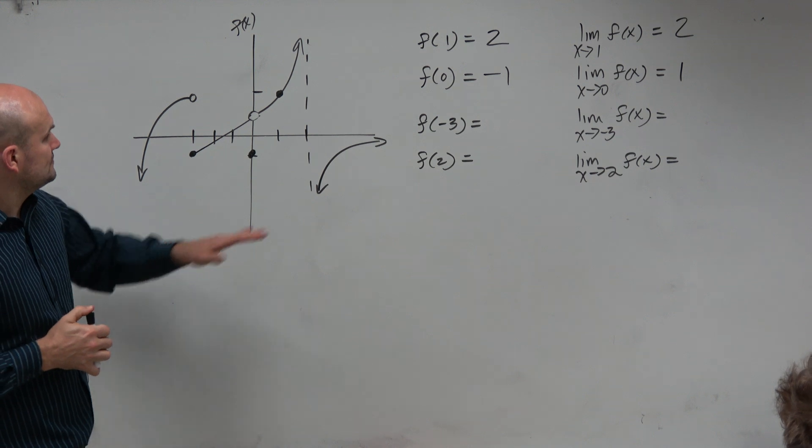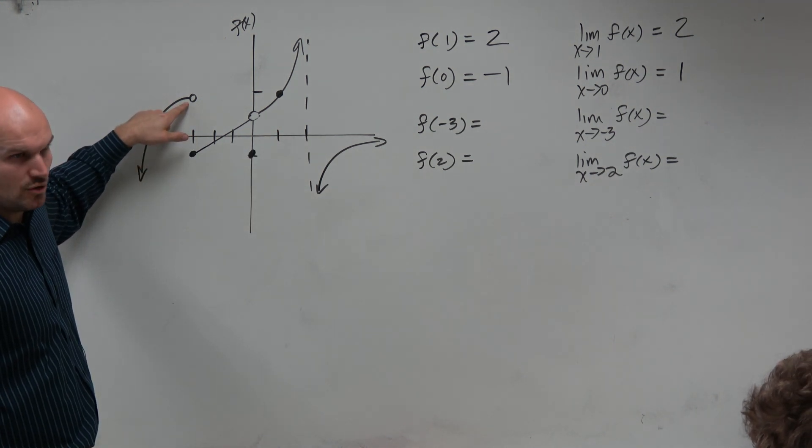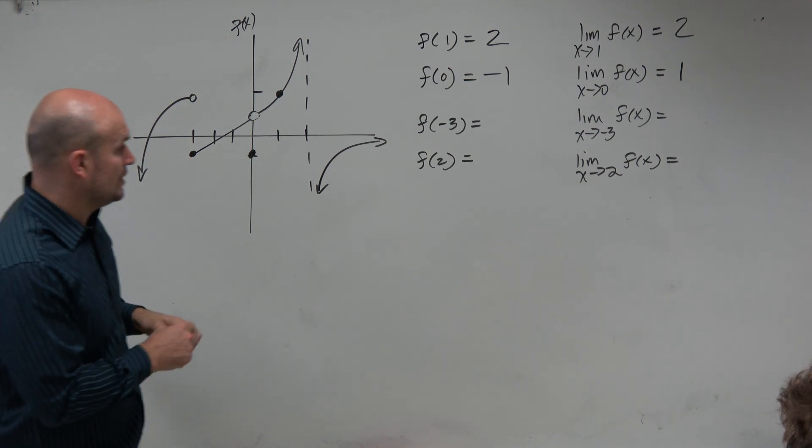Let's go and look at f of negative 3. So we go to negative 3. f of negative 3 is not up there. That's undefined, right? That's a hole that's filled in line. So that's going to be also negative 1.